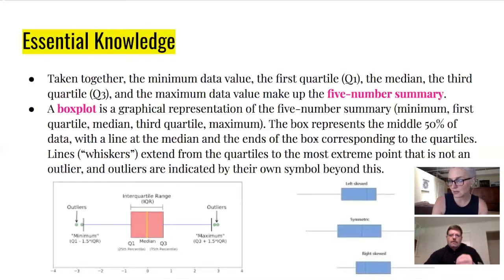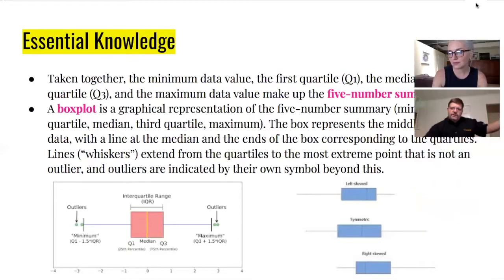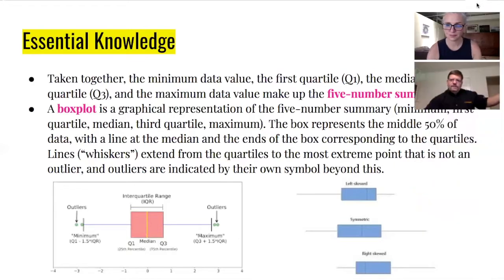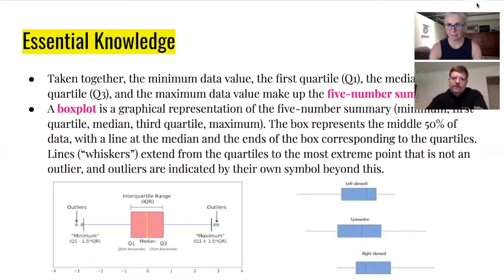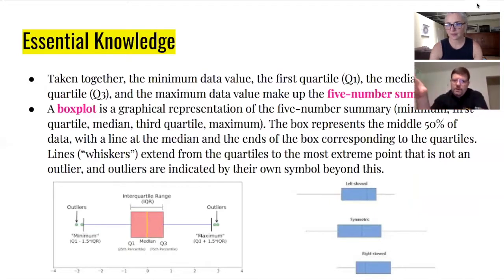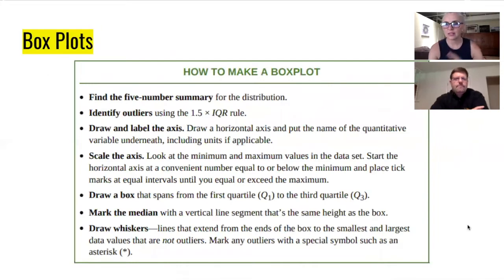If there's a longer tail to one side or the other, that's a representation of it being skewed towards that direction. In the top example that says left skewed, you notice the whisker on the left side of the box and whisker plot is longer — that's how you can tell.